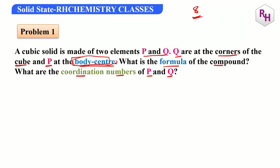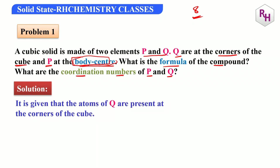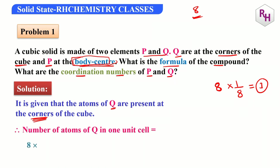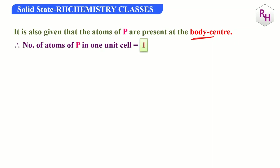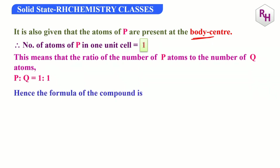For the formula: Q atoms are present at the corners. Total corners are 8, and each corner contributes 1/8, so Q = 1. P is at the body center, so number of P atoms per unit cell is 1. Hence the formula becomes PQ.